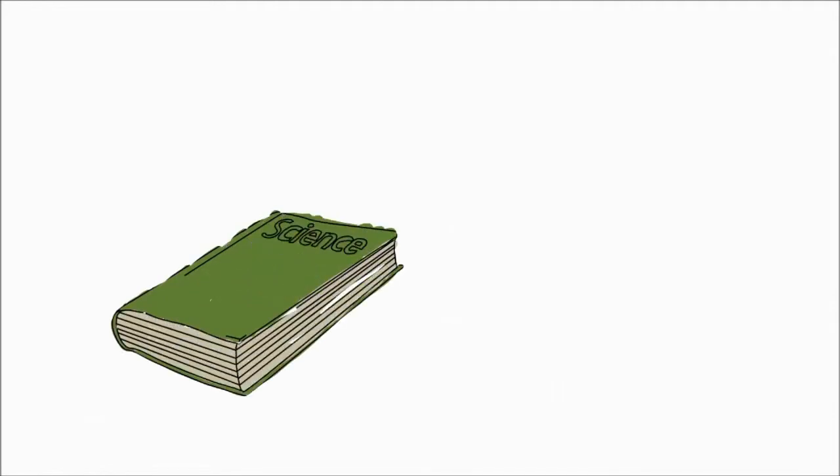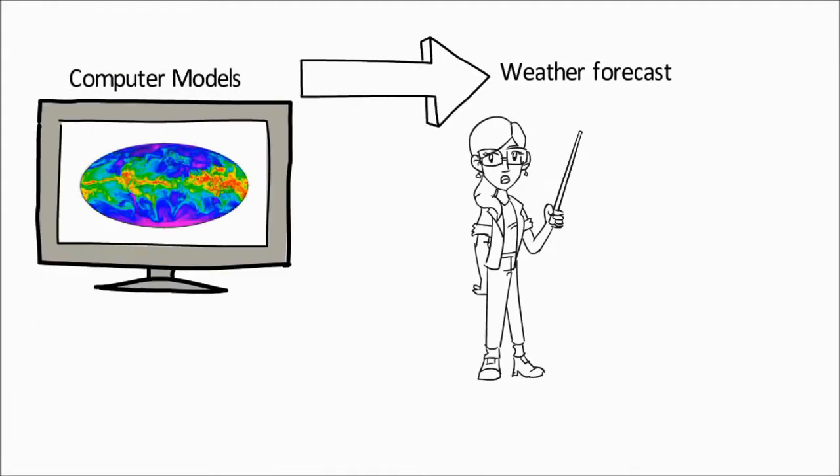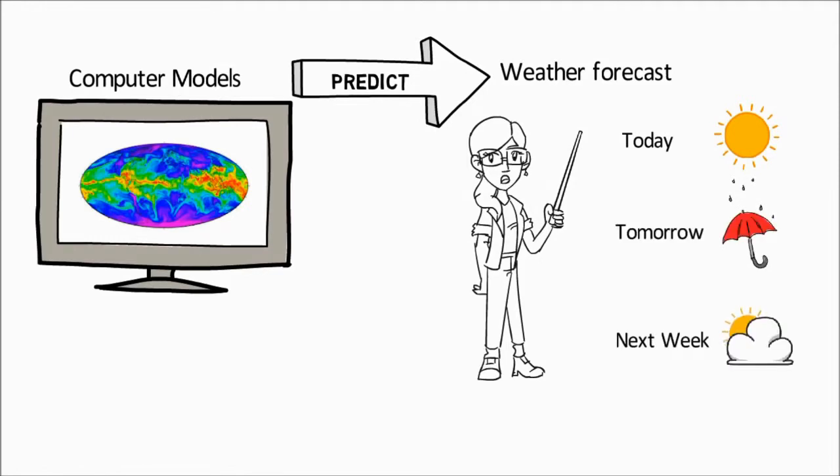Models pull together theory and observations. For example, weather forecasters use computer models to predict if it will be sunny or rainy tomorrow or next week using their knowledge of the physics of the air coupled with a variety of weather observations such as temperature and humidity.